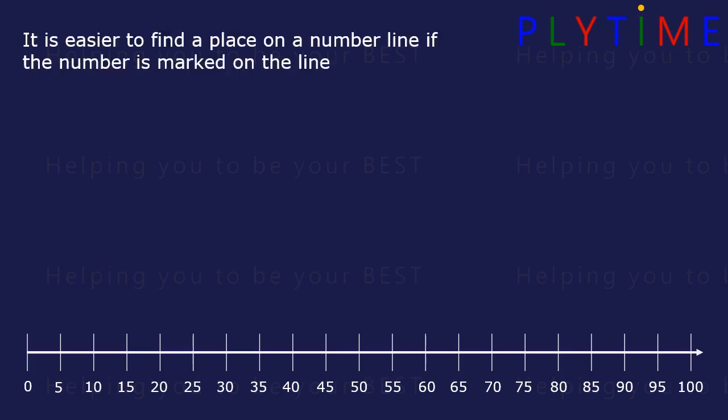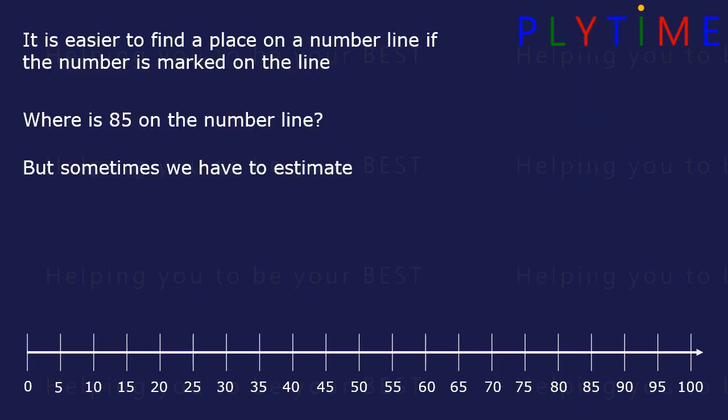It's easier to find a place on a number line if the number is marked. Where's 85? Here it is. But sometimes we have to estimate. Where would 48 be? We know it's between 45 and 50, so it would be around here, 48.